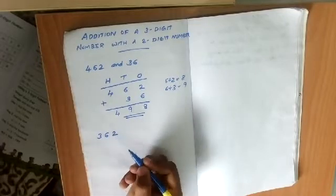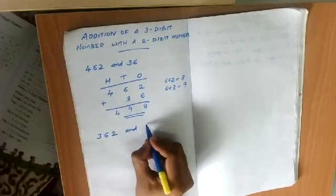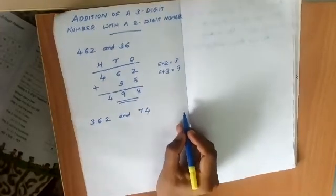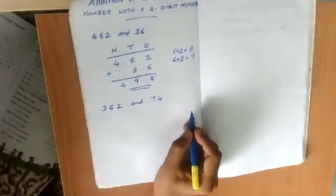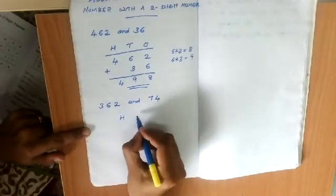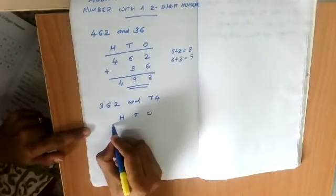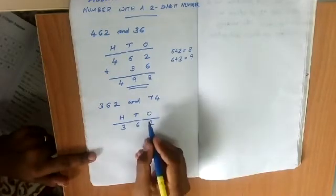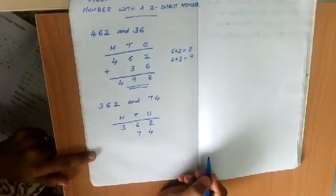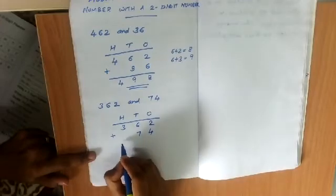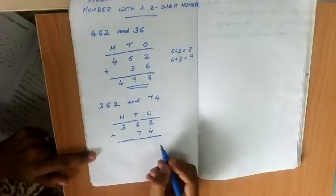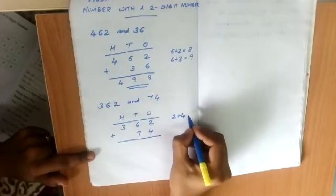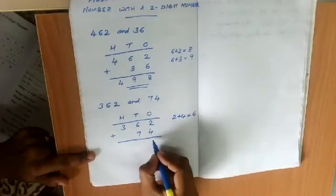For the second example, we take the three-digit number 362 and the two-digit number 74. We need to add these. First we add the ones place digits, which are 2 and 4. So 2 plus 4 is equal to 6, and we write 6 in the ones place.